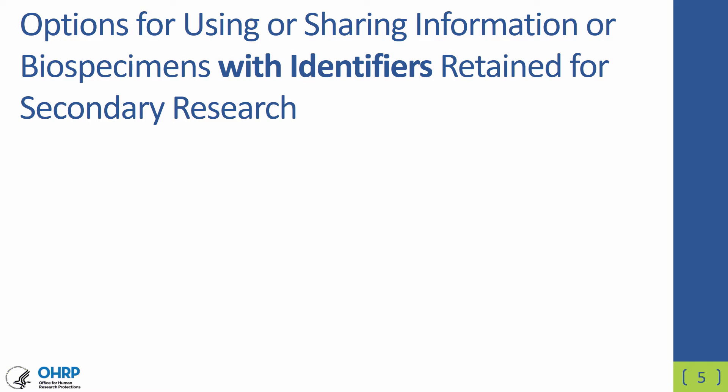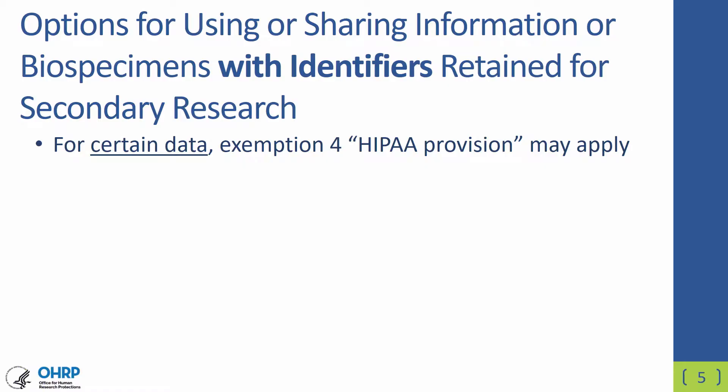The options for using or sharing informational biospecimens with identifiers retained for secondary research: because this secondary research involves identifiable materials, anytime you have identifiable material it's called human subjects research. Your options will be either exemptions that could work in your favor, or it will have to be considered under non-exempt human subjects research requiring IRB review. For certain data research, Exemption 4 with a new expanded provision — the so-called HIPAA provision — may apply to you. If you are an investigator under a HIPAA-regulated entity and you propose to use this material with identifiers, you could potentially do this under Exemption 4.